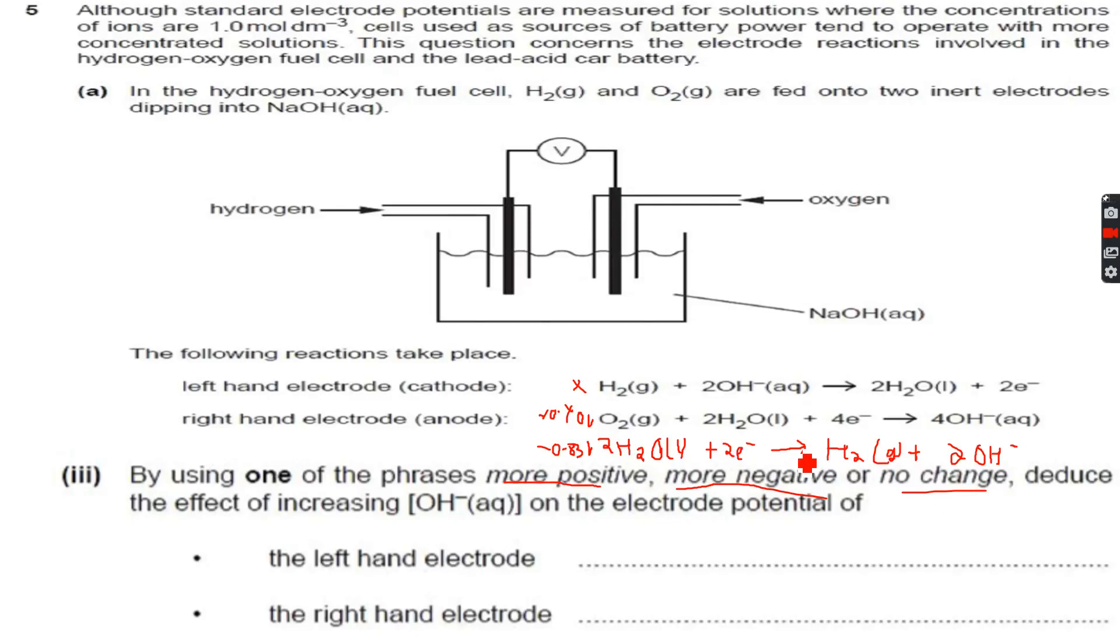Le Chatelier's principle: as we increase OH-, the system will oppose the increase, so the equilibrium will shift to the left. As I said, whenever equilibrium shifts to the left, E° becomes more negative.